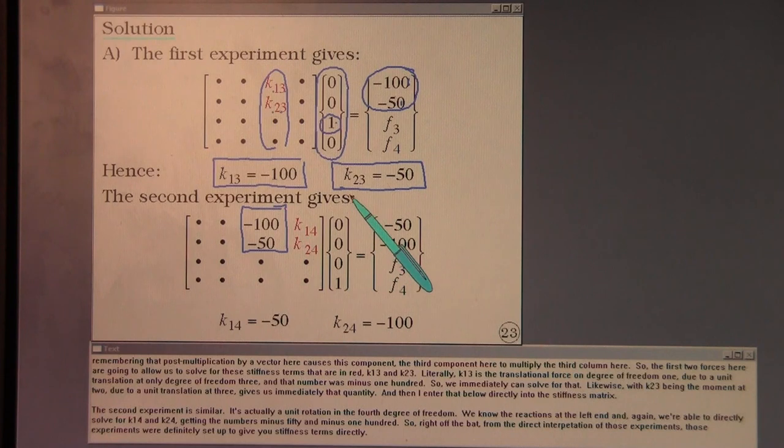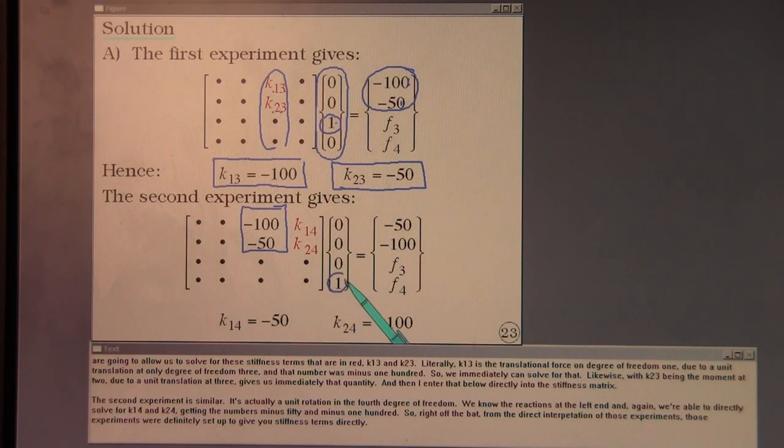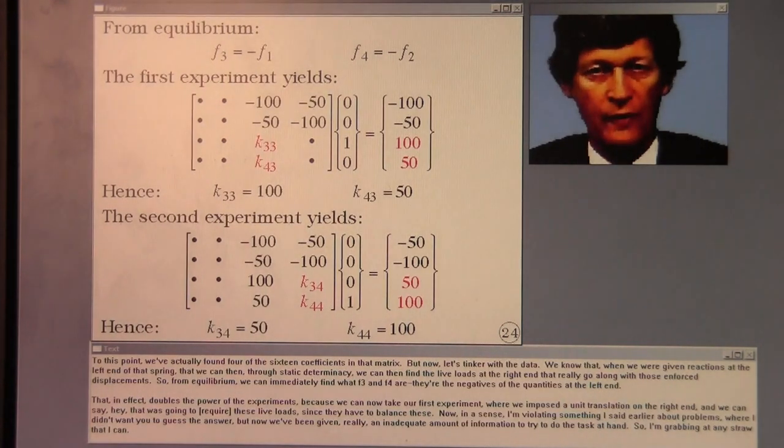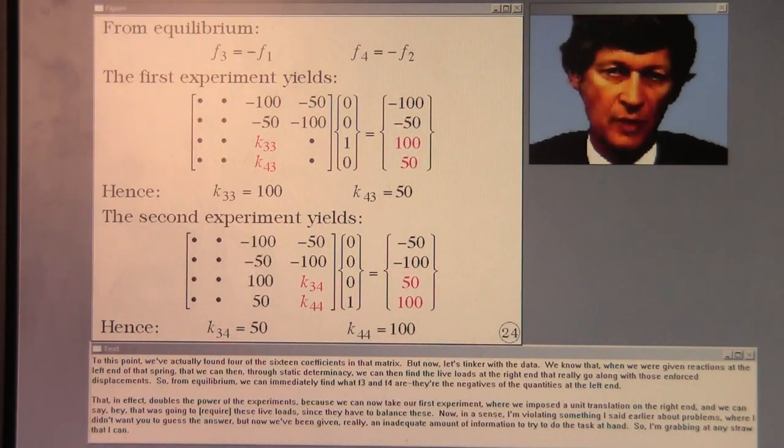The second experiment is similar. It's actually a unit rotation in the fourth degree of freedom. We know the reactions at the left end. And again, we're able to directly solve for K14 and K24, getting the numbers minus 50 and minus 100. So, right off the bat, from the direct interpretation of those experiments, those experiments were definitely set up to give you stiffness terms directly. To this point, we've actually found four of the 16 coefficients in that matrix.